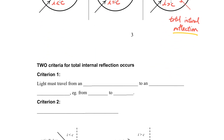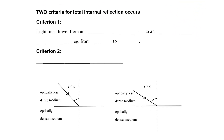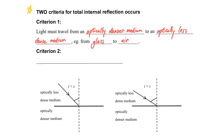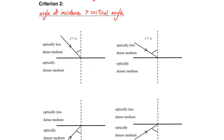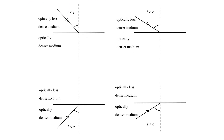We want to predict when we will have total internal reflection. Here are the two criteria required for total internal reflection to occur. Criterion one: the light must travel from an optically denser medium to an optically less dense medium — for example, from glass to air. Criterion two: the angle of incidence must be larger than the critical angle. Both criteria must be satisfied in order to observe total internal reflection.